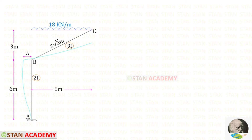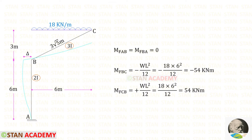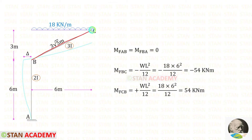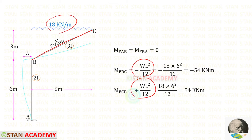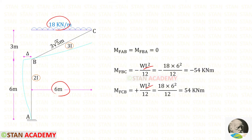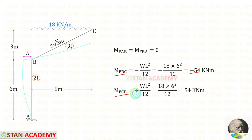Here I have taken only the left half of the frame, keeping this displacement as delta. Now let us find the fixed end moments. In member AB there is no load, so both fixed end moments are 0. In member BC, we have a UDL of 18 kN per meter. Using the formula, with the horizontal distance of 6 meters for L, we get M_BC = −54 and M_CB = +54.